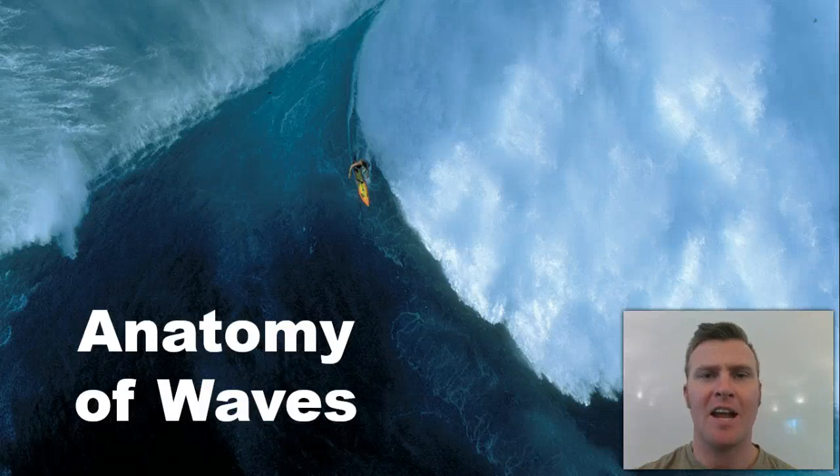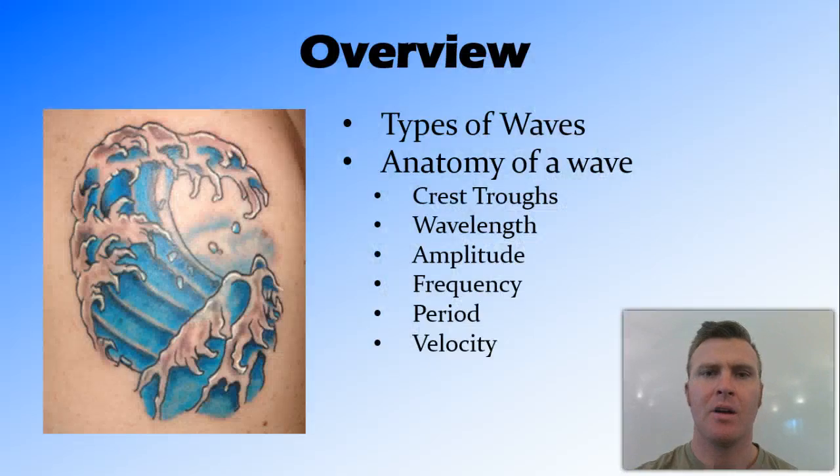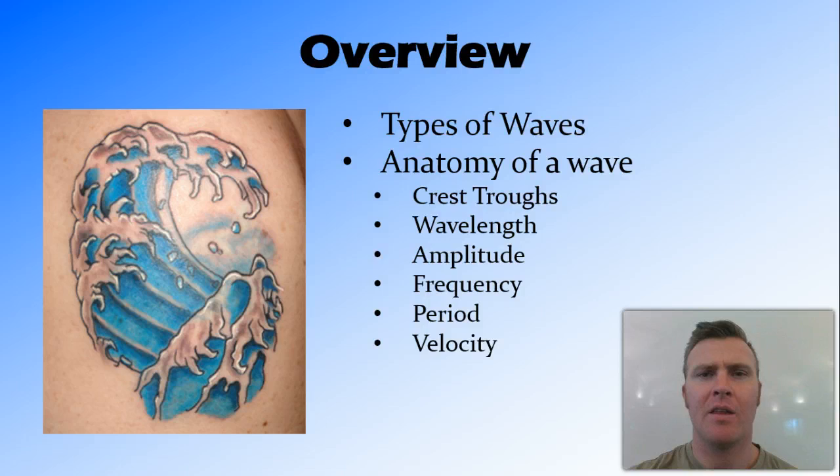In this video, we're going to look at the anatomy of waves and how we describe the features of waves. We're going to do a little bit of revision on the types of waves, and then we're going to get into the anatomy, including crests and troughs, wavelength, amplitude, frequency, period, and velocity.